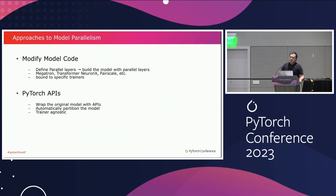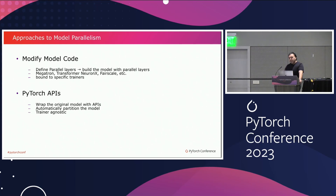How are these models implemented today in the OSS space? There are two main approaches. One is to modify your model code — define parallel layers and build your model on top of those parallel layers. This is very much a Megatron style, and we've seen it in libraries like Ferriscale, Transformer, and Neuronext from AWS. These are mostly bound to specific trainers. On the other hand, PyTorch APIs take a different strategy, requiring no change or very minimal changes to your model. You pass your model as-is, it automatically partitions your model, and it is trainer agnostic.